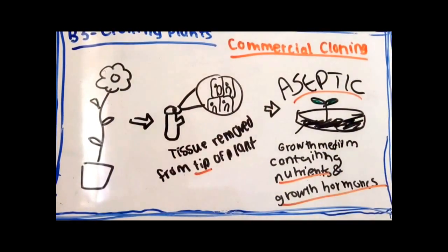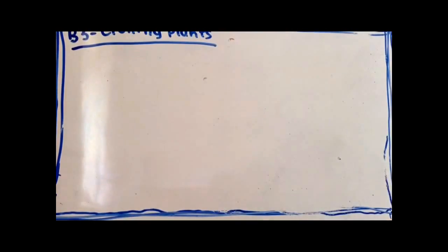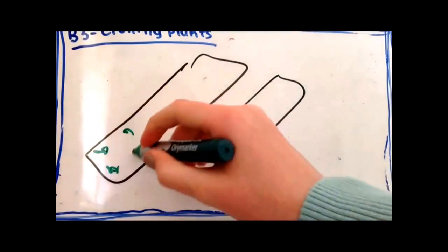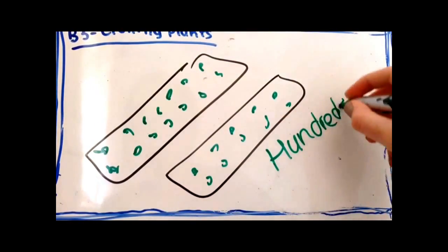Finally, you would move the tissues to potting compost once they start to produce shoots and roots to carry on growing. Hundreds of clones can be made from just one parent plant.